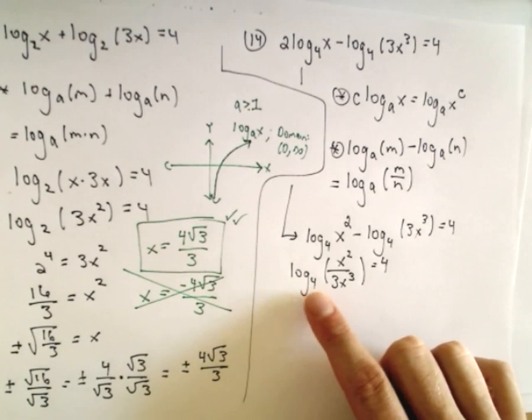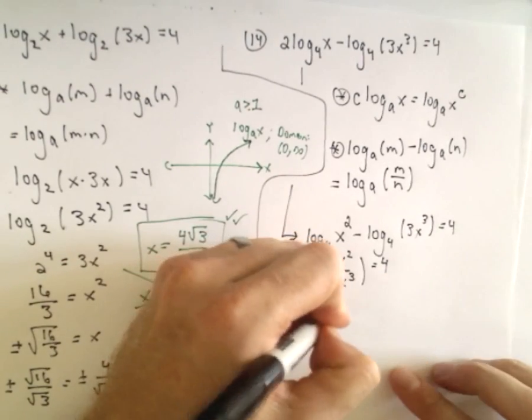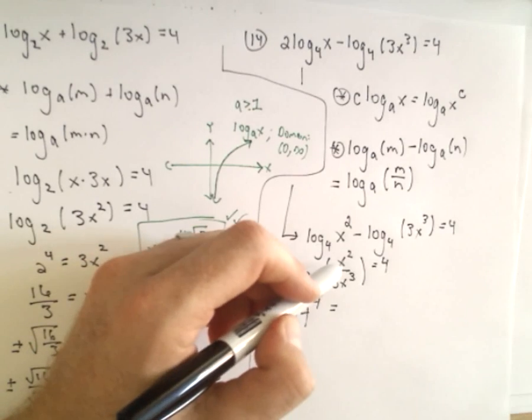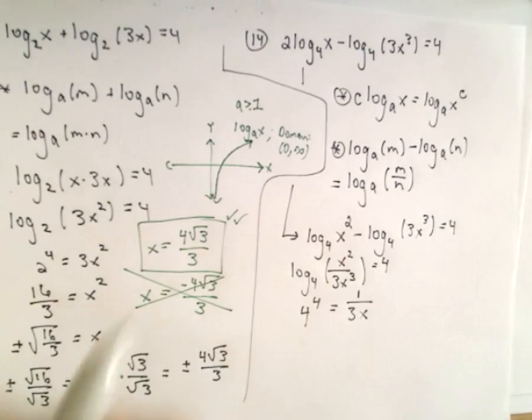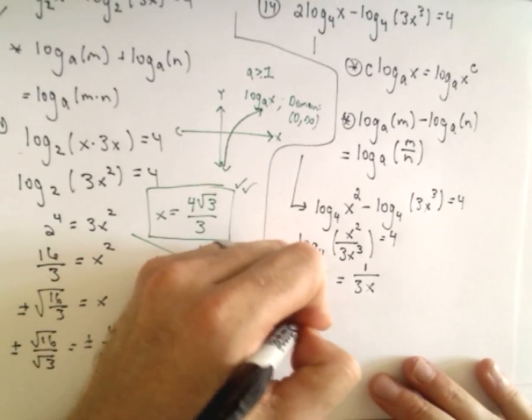Now I'm going to rewrite this using exponential notation. So 4 raised to the fourth equals, I could write equals x squared over 3x to the third, but we can simplify. That's just going to be 1 over 3x. Well, 4 to the fourth, that's going to be 256.